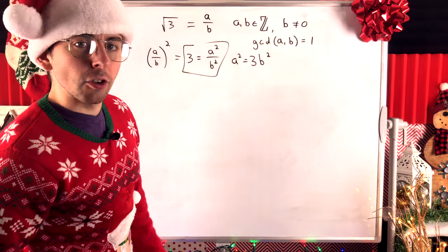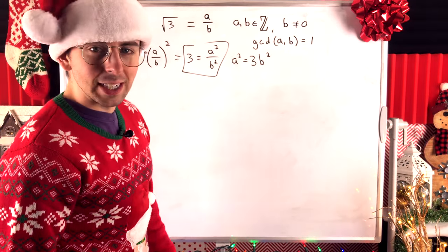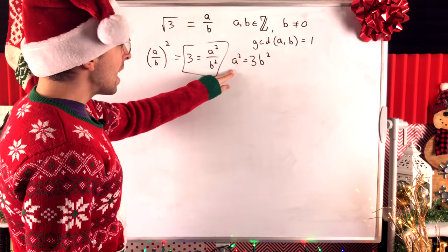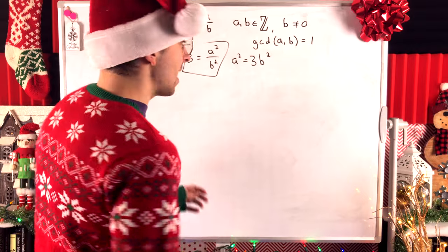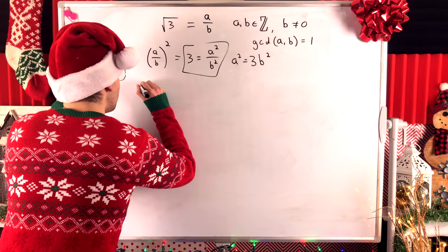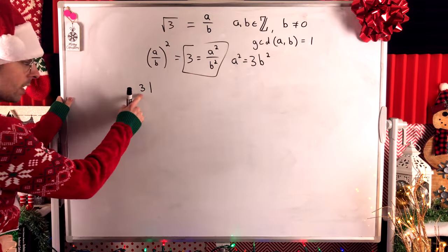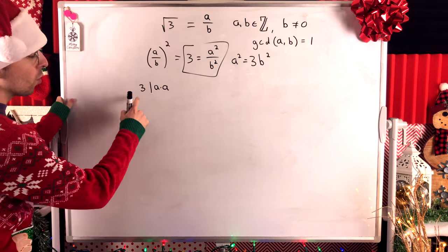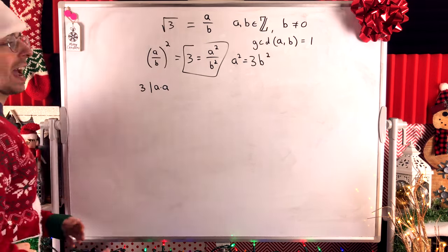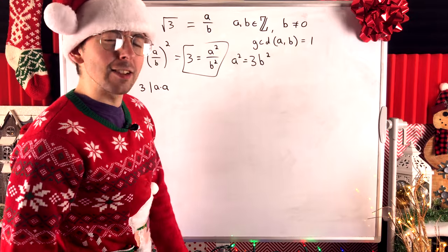B is an integer, so B squared is also an integer. This means that A squared is an integer multiple of 3. So, by definition of divides, we can say that 3 divides A squared, but maybe we write A squared like this, A times A. That's what A squared is, after all.